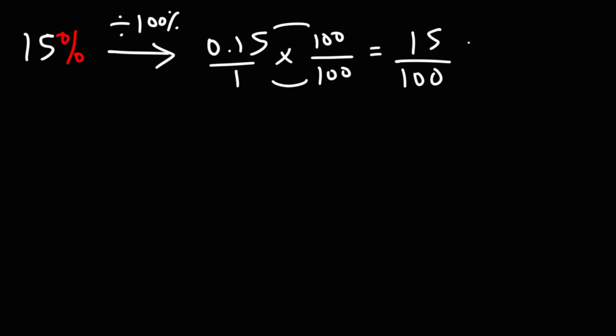Now we need to simplify the fraction. We could divide both numbers by 5 because this ends with 5, that ends with 0. So we know that they're divisible by 5. 15 divided by 5 is 3. 100 divided by 5 is 20. So 15% is equal to 3 over 20 as a fraction.